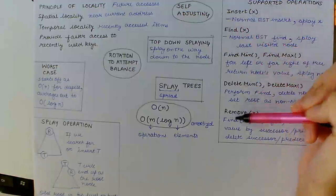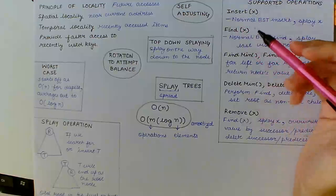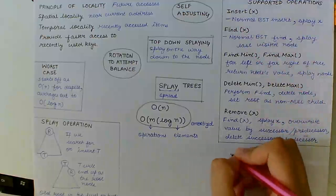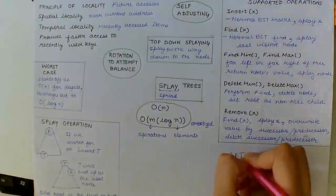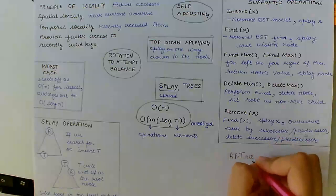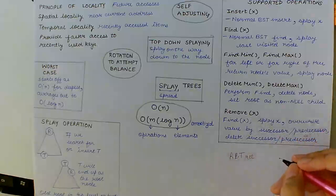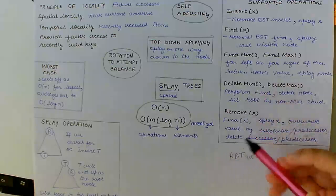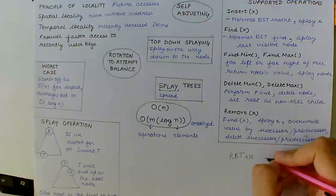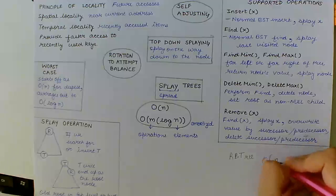And if you can recall, in RBT, that is red-black trees, the cost of inserting, finding and removing is O(log n).